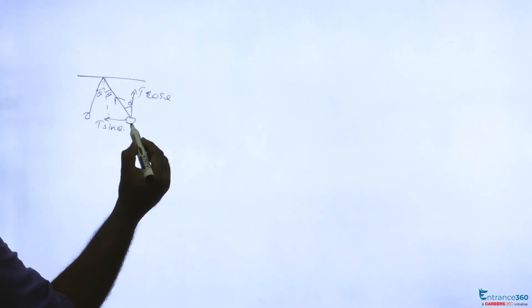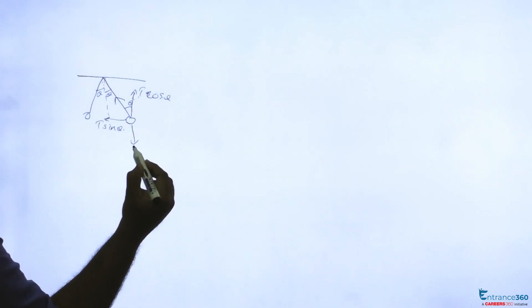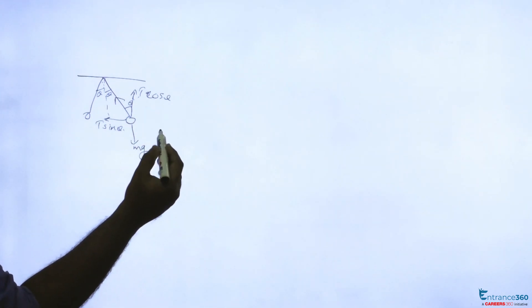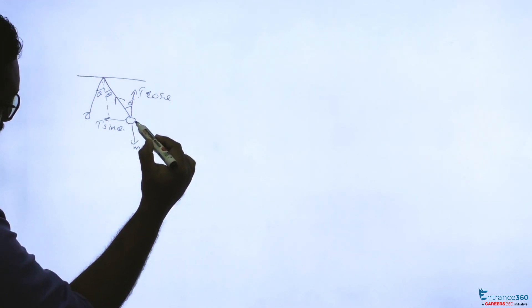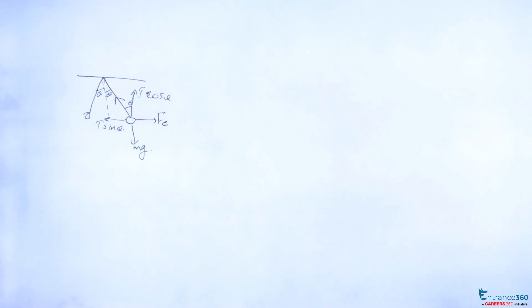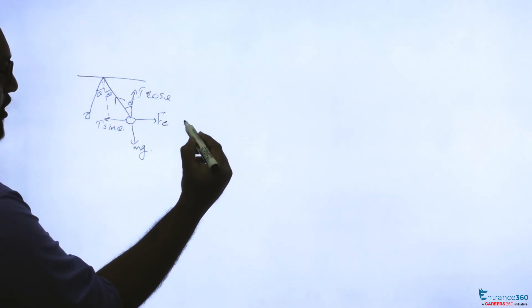mg is acting downwards. Then force of repulsion is acting here, and force between two charges is given by k q square by distance square.